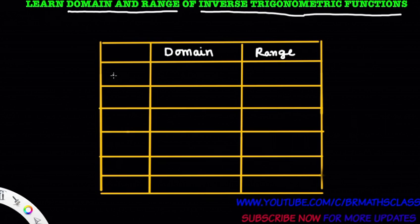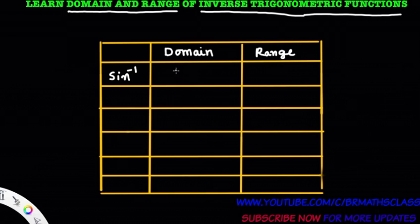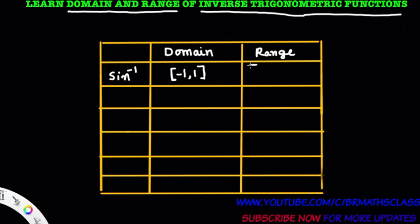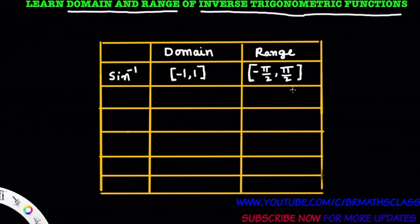In this class we will learn domain and range of all inverse trigonometric functions. The domain of sine inverse function is the closed interval minus 1 comma 1. There is a trick to remember these things which I'll explain using this table. The range of sine inverse is the closed interval minus pi by 2 comma pi by 2.